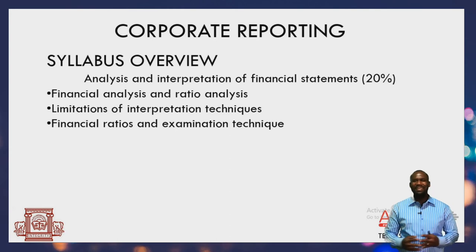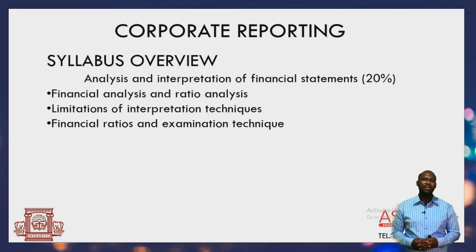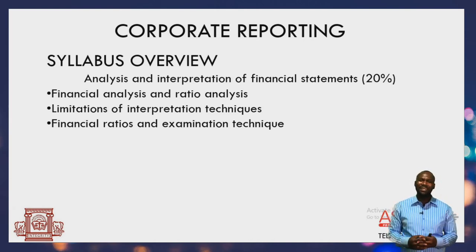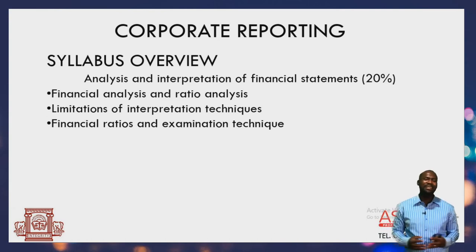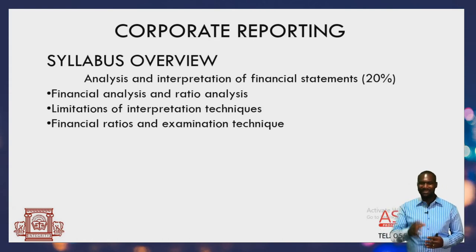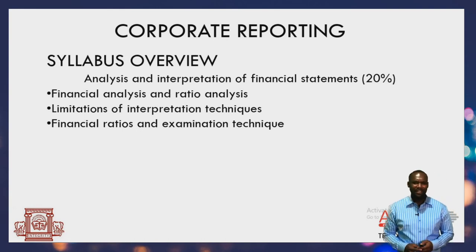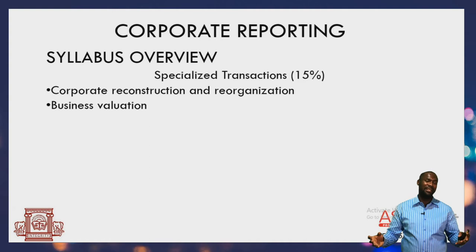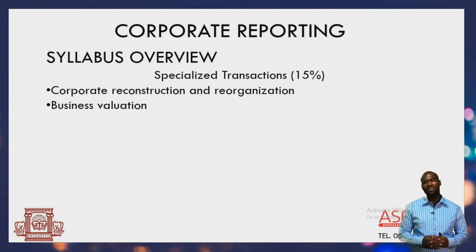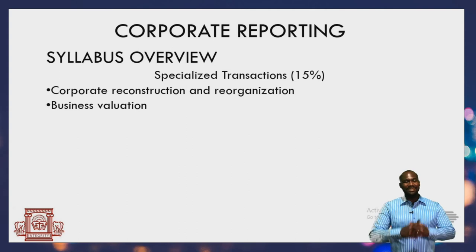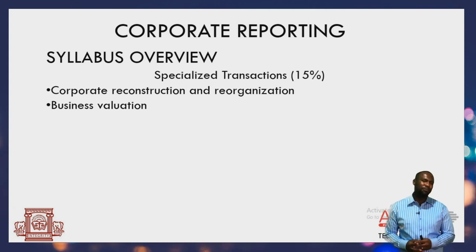Our last two areas: first is analyzing and interpreting financial statements — an issue already considered at level 2, but here with more complexity. This is also a key component for the strategic case study paper, so good understanding here is critical. We finalize with corporate reconstruction and reorganization, as well as business valuation — two topics called specialized transactions. The syllabus assigns 15% to this particular area. These are all the issues to be covered for the corporate reporting paper.